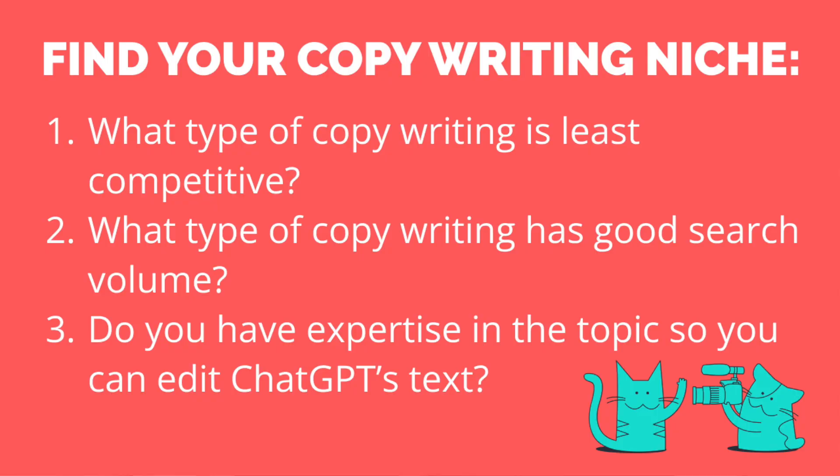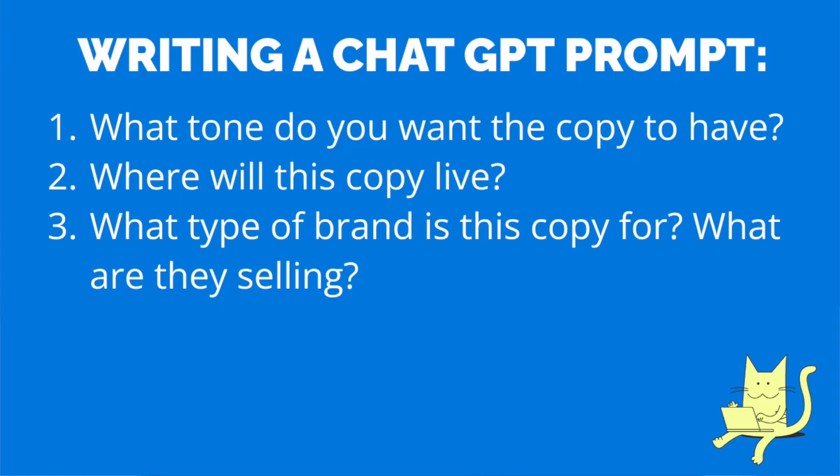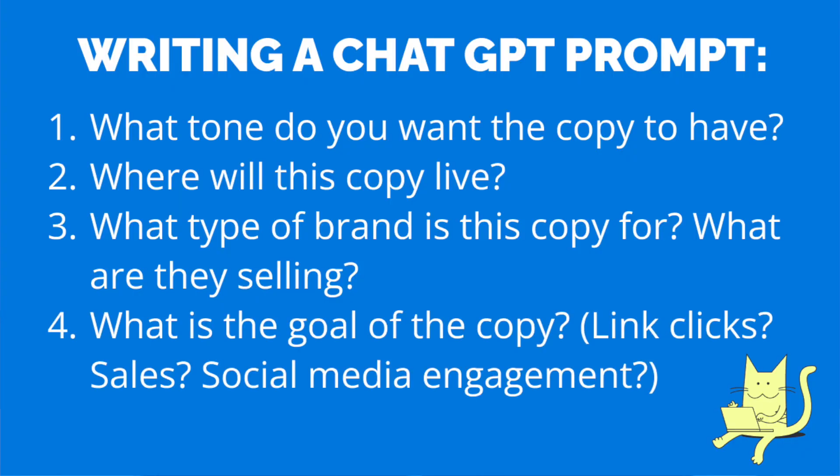Figure out what type of copywriting is getting a lot of reviews and therefore search volume, and pick a type that is easily accomplishable — this is probably something you want to have a little bit of expertise in. For example in this video, I'm going to pretend I am a copywriter on Fiverr for consumer products. For ChatGPT to really be good at this, you need to tell it quite a bit of information: the type of copy or writing and the tone you want it to have, where the copy will live — whether on a website, social media, or elsewhere — what type of brand it's for, what they're selling, and what the goal of the copy is. Being able to craft a really specific and useful prompt for ChatGPT is truly a skill you need to learn.